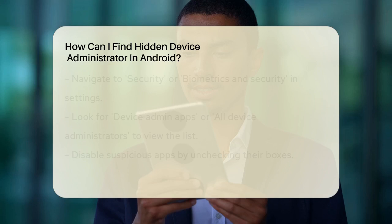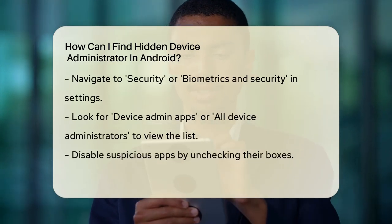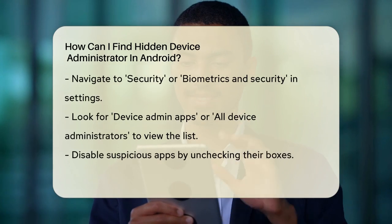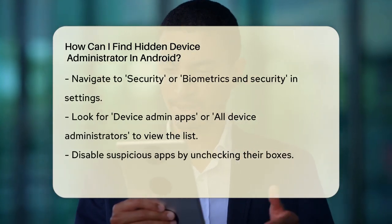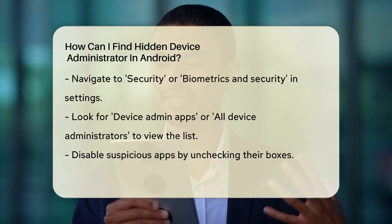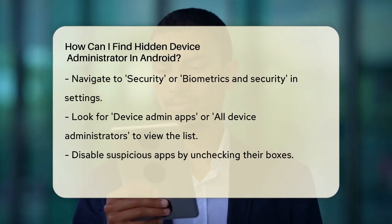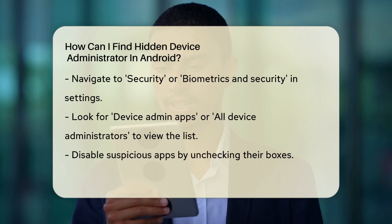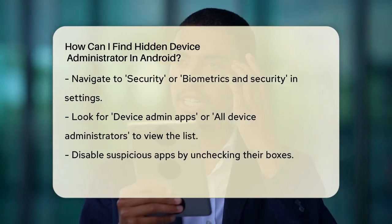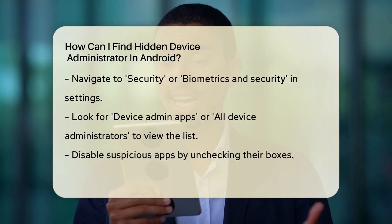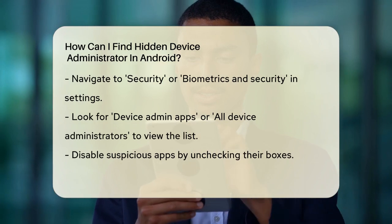To check for these apps, go to your Android settings. The steps might vary slightly depending on your device, but here's a general guide. Open your settings, scroll down to the Security or Biometrics and Security section, and then look for Device Admin Apps or All Device Administrators. Here, you'll see a list of apps that have been granted administrator privileges. If you see any suspicious apps, you can disable them by unchecking the box next to their name.